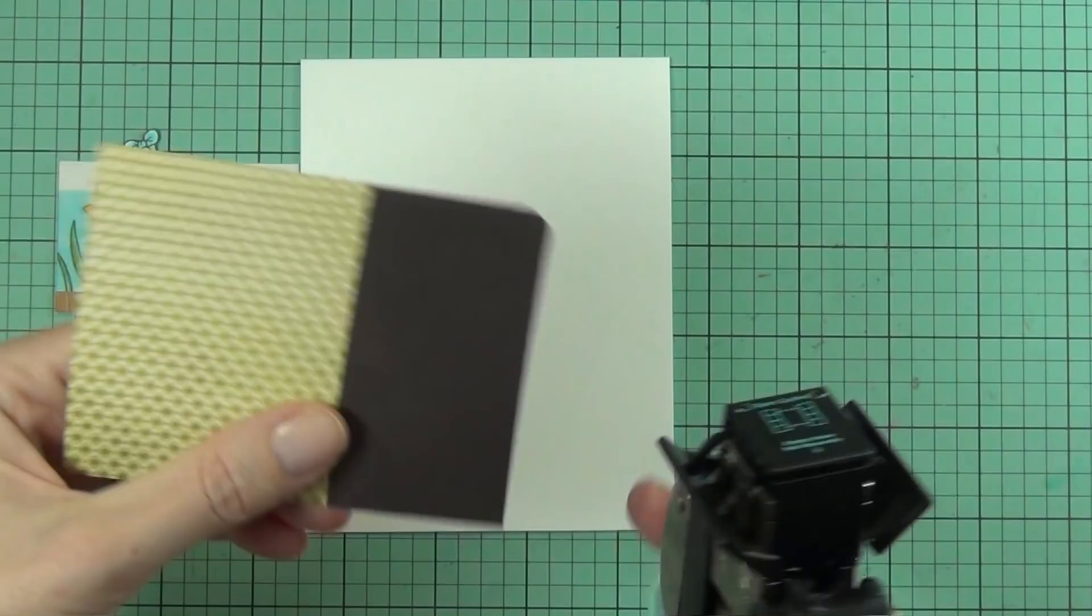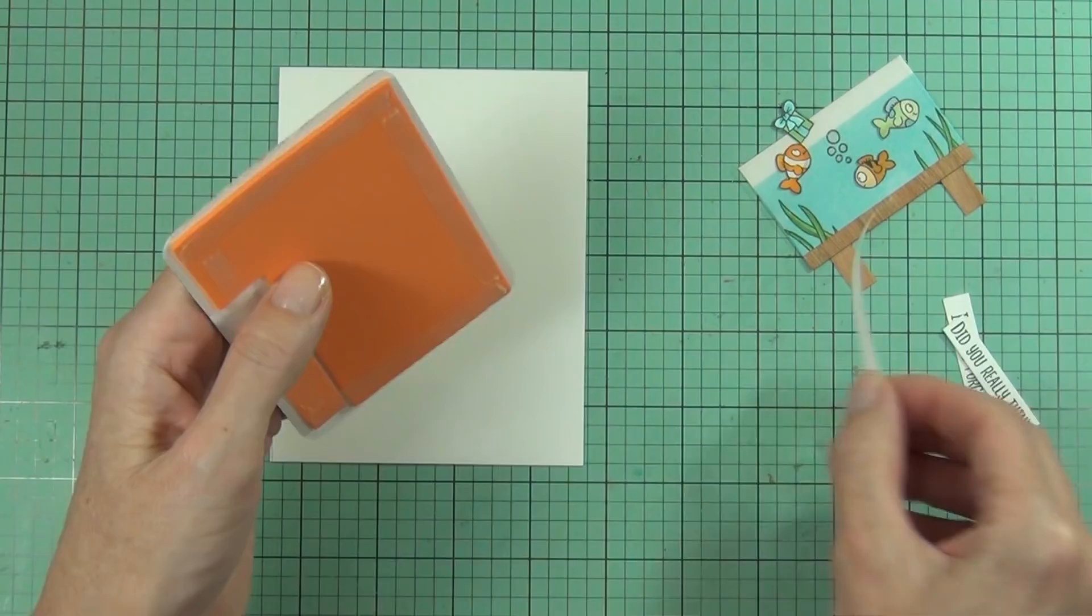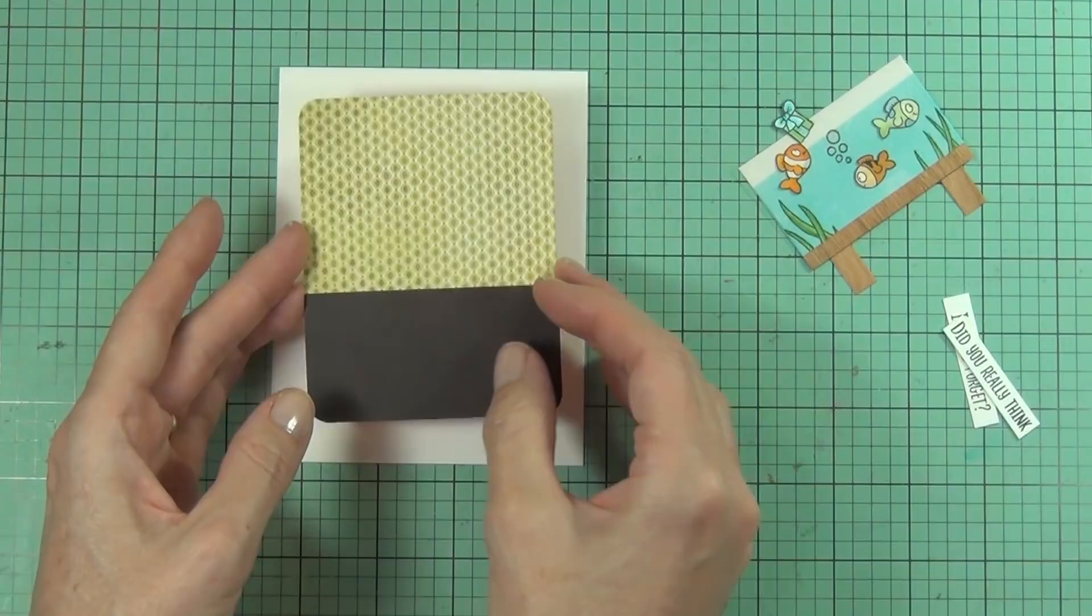But I used this smaller edge—I think it's the quarter inch edge—on my panel. And I've just popped it up with some orange fun foam just because orange is fun and it's fun foam.